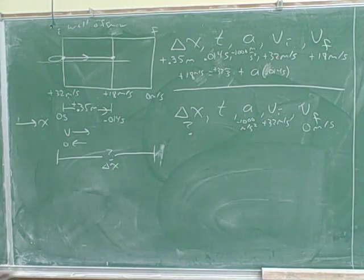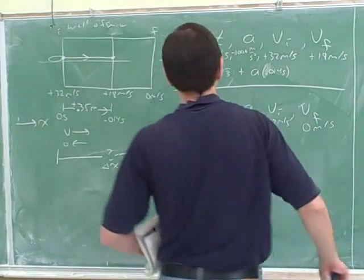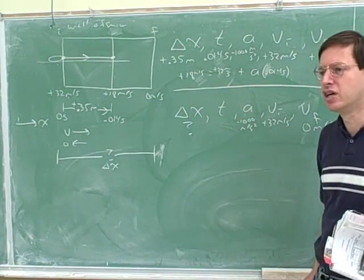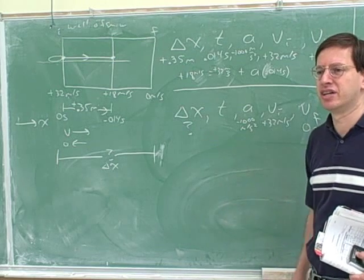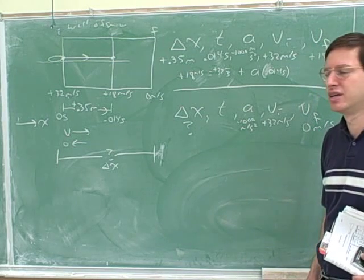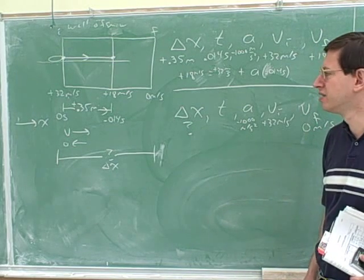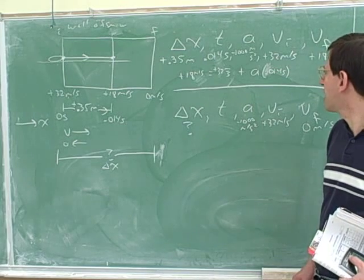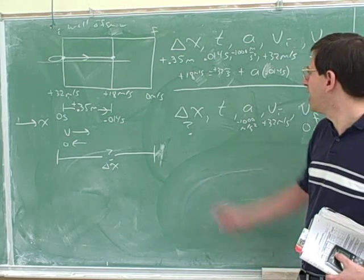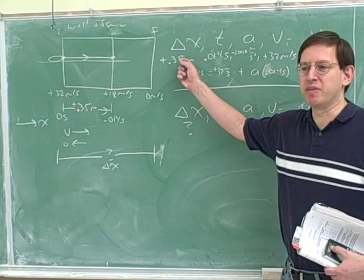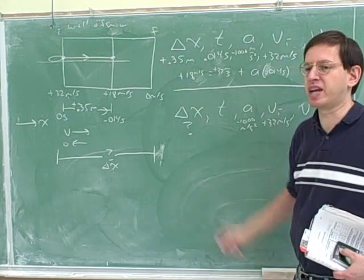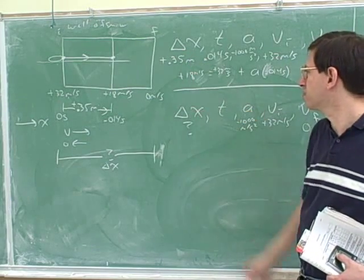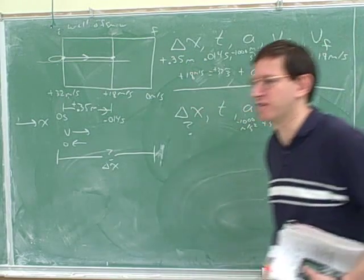Before we work that out, let's do a little bit of predicting. We're supposed to try to predict the answer. What can we predict about delta x here? It has to be larger than the original — bigger than 0.35 meters. It's a good habit to try to make a prediction; we know we should be getting something bigger than 0.35 meters.